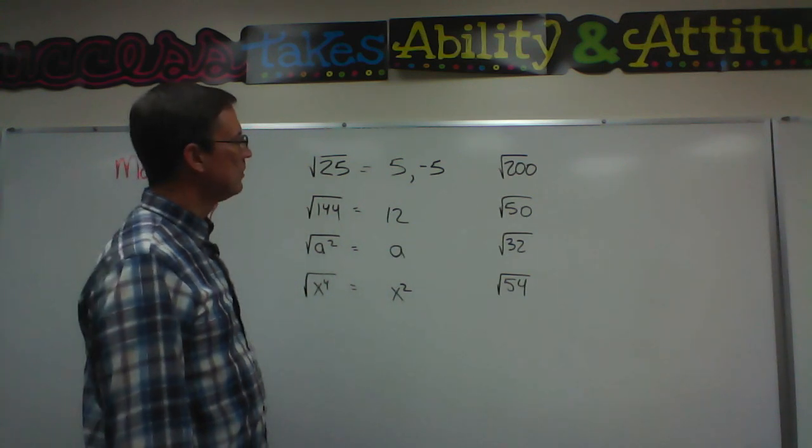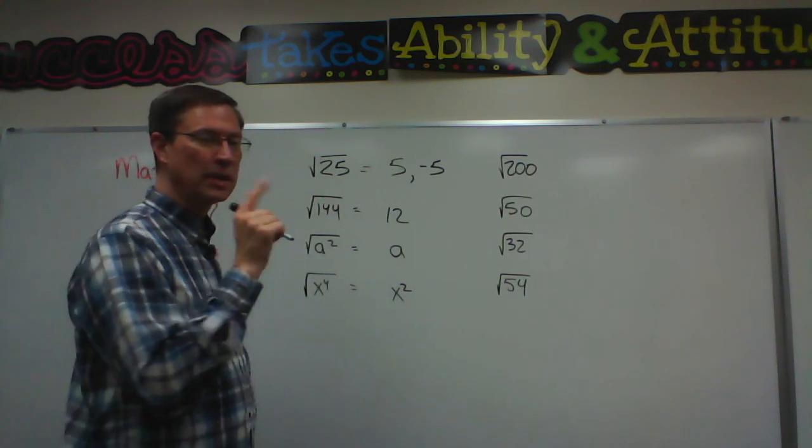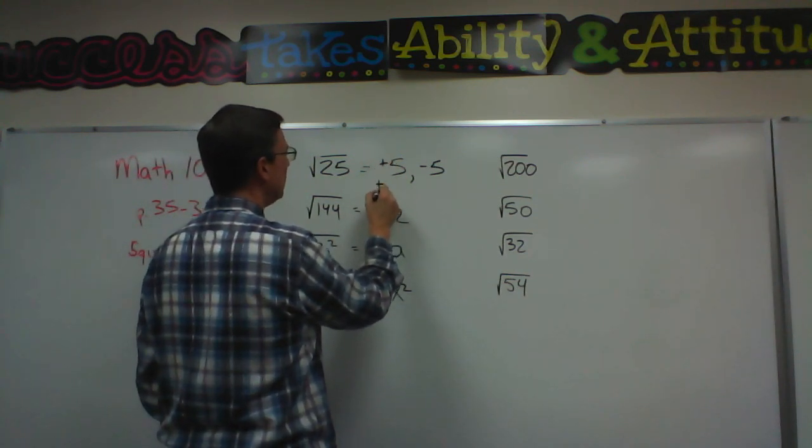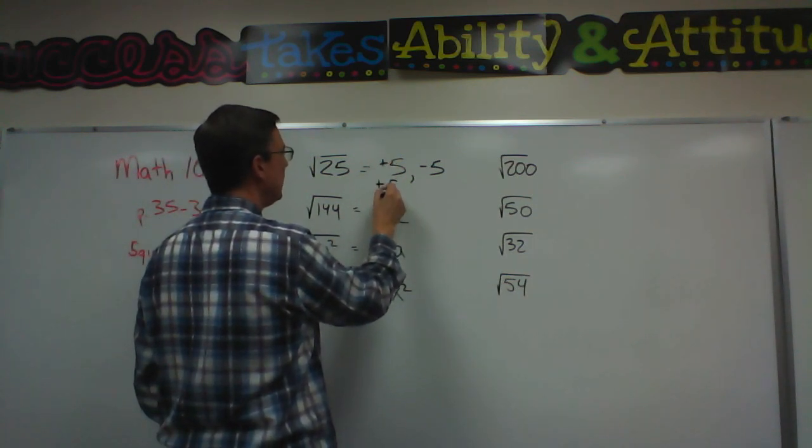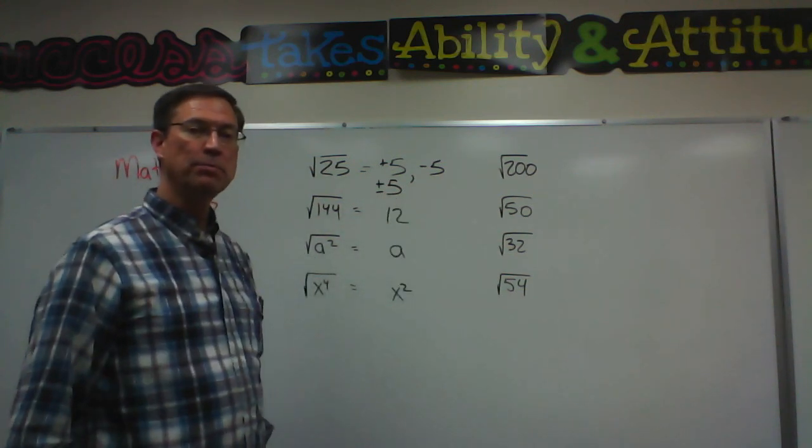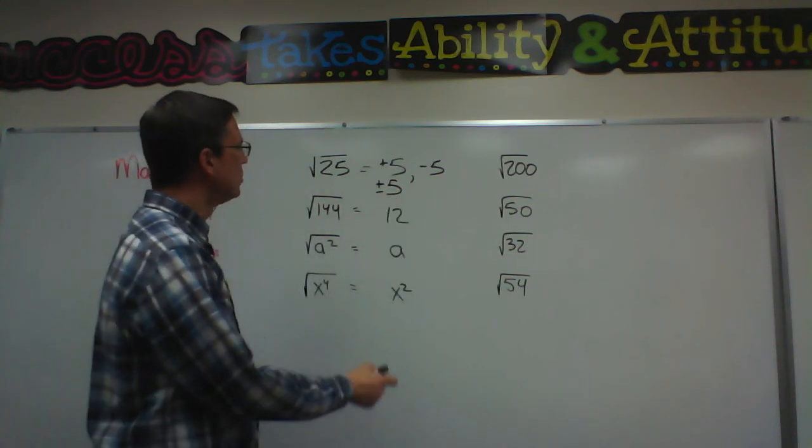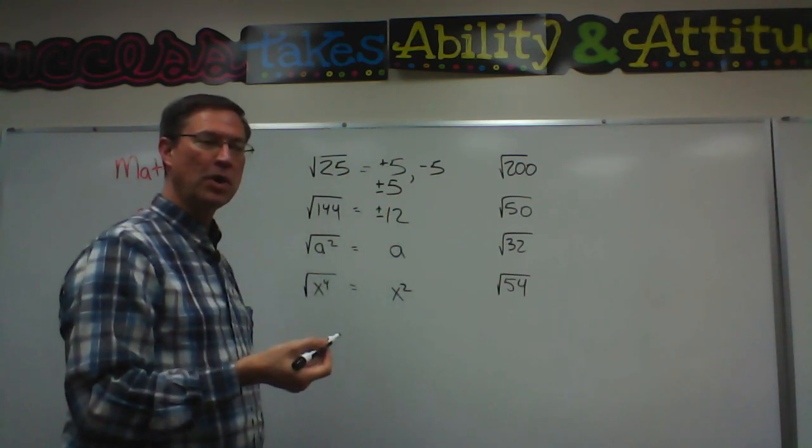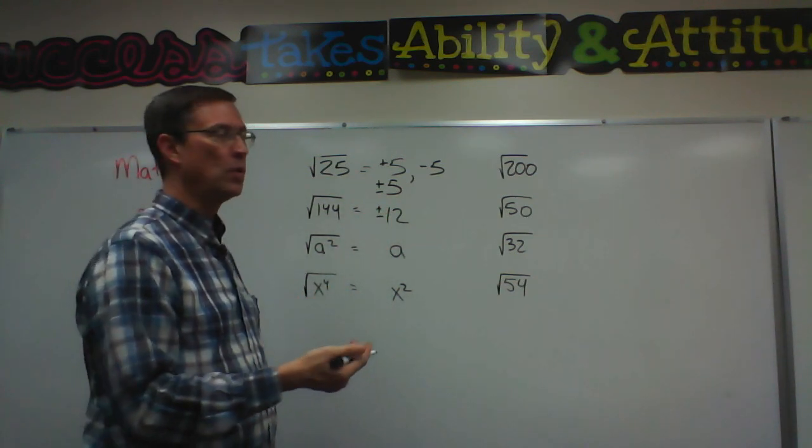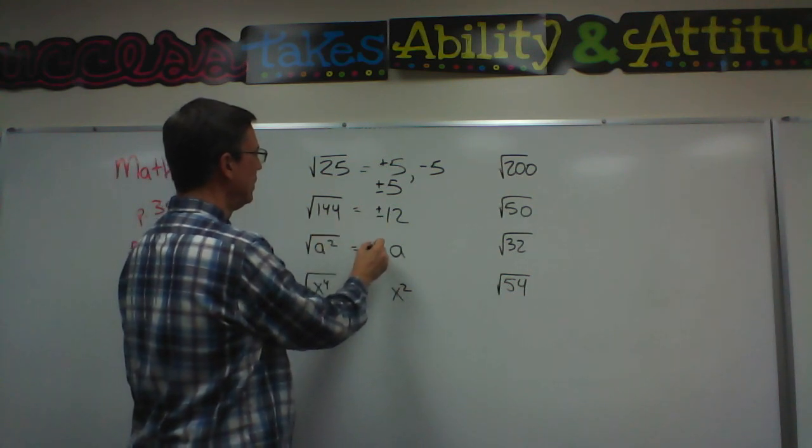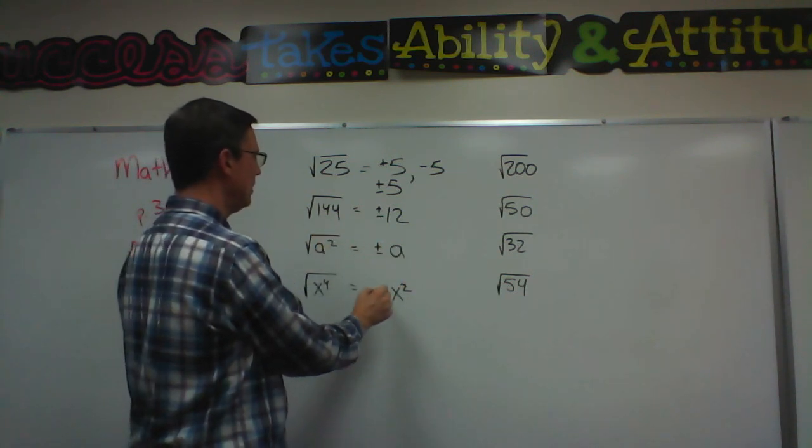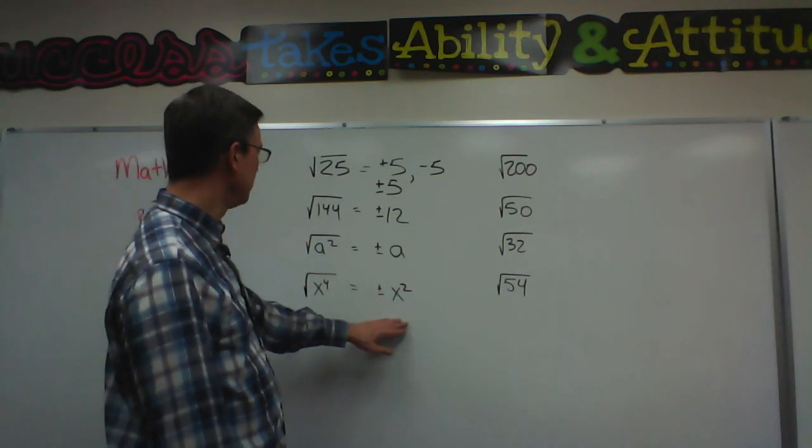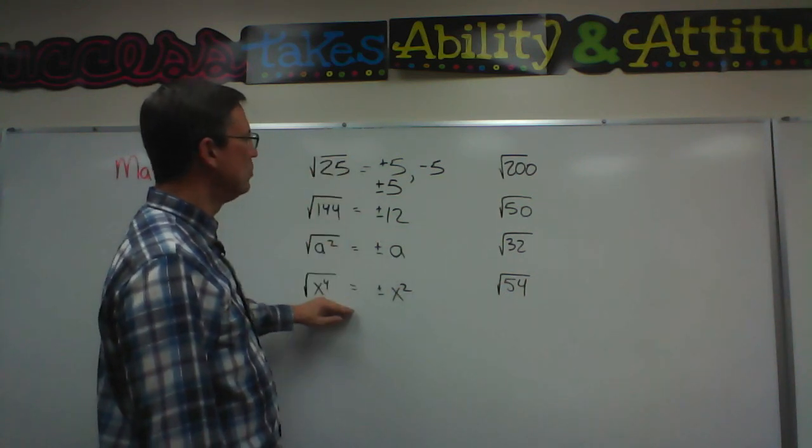So mathematicians have a shortcut way of writing that. Instead of writing it like this we write the plus and the minus kind of put them together and then the 5. So that means plus or minus 5. So I really need to do that with all of these and say plus or minus 12, plus or minus a, plus or minus x squared. So that's what square root means.